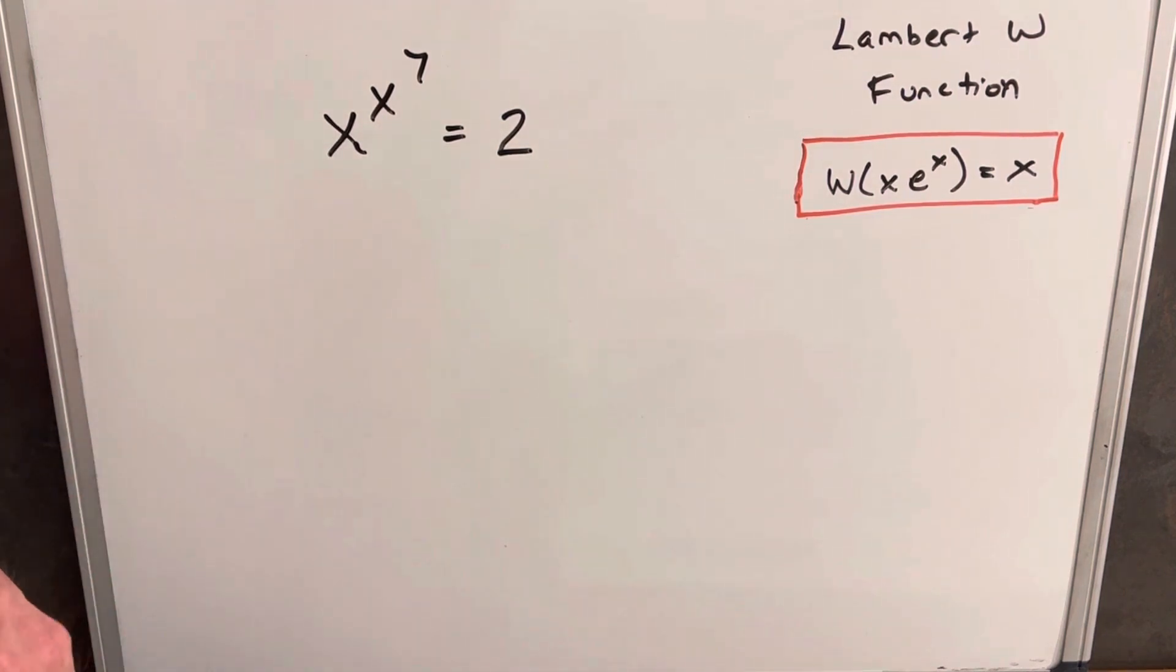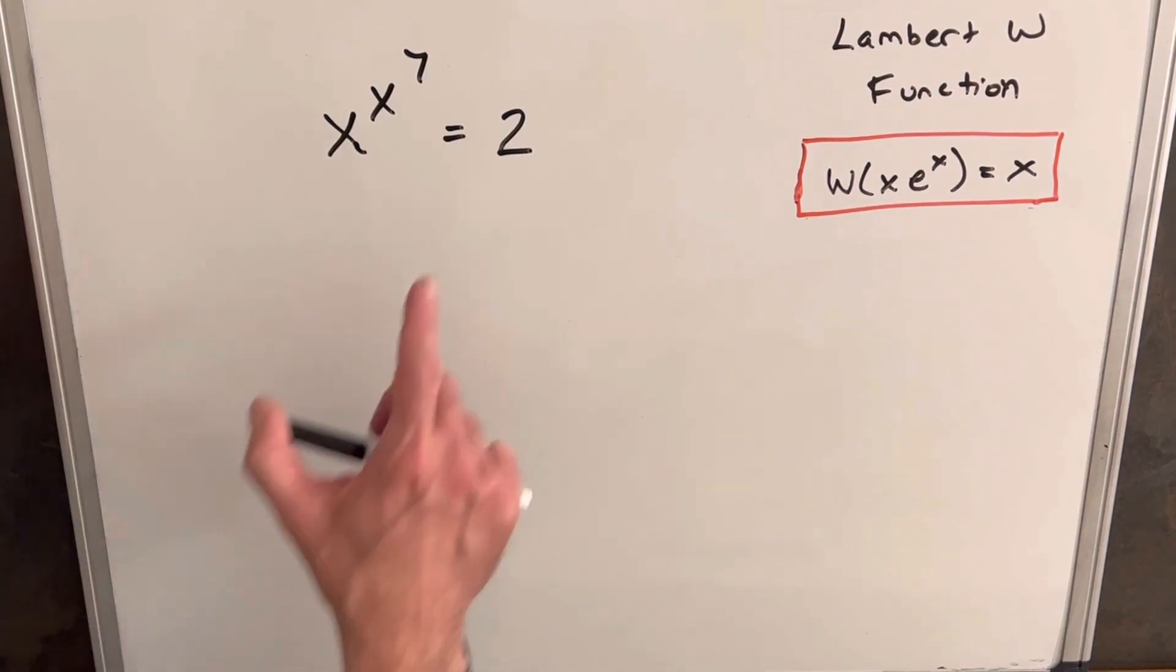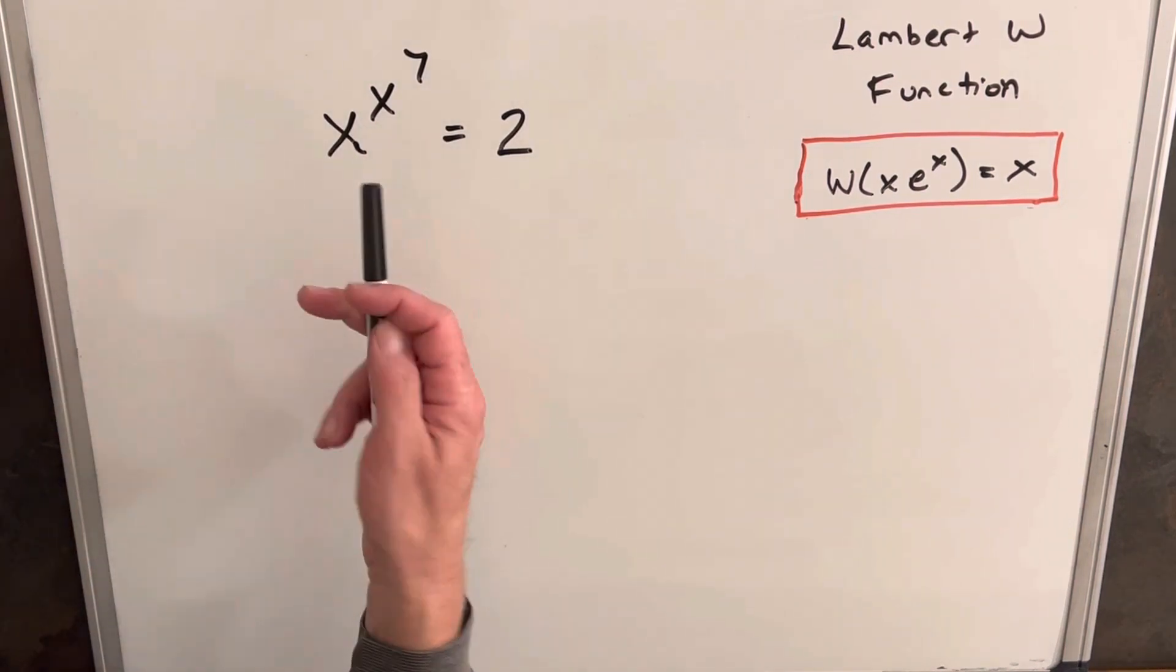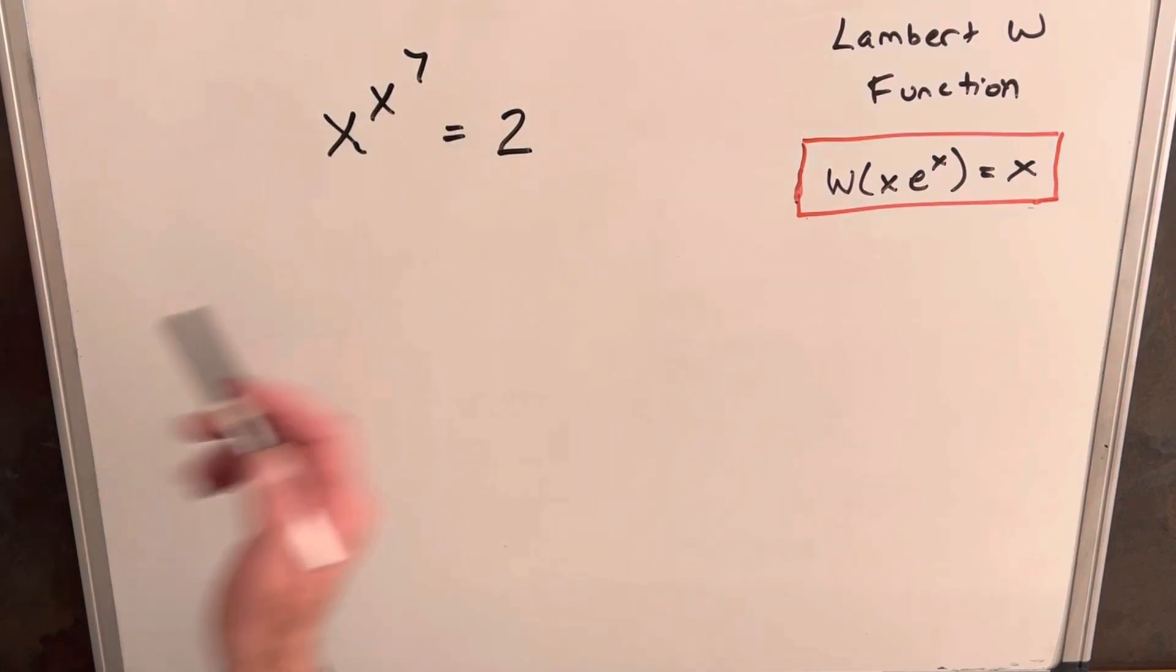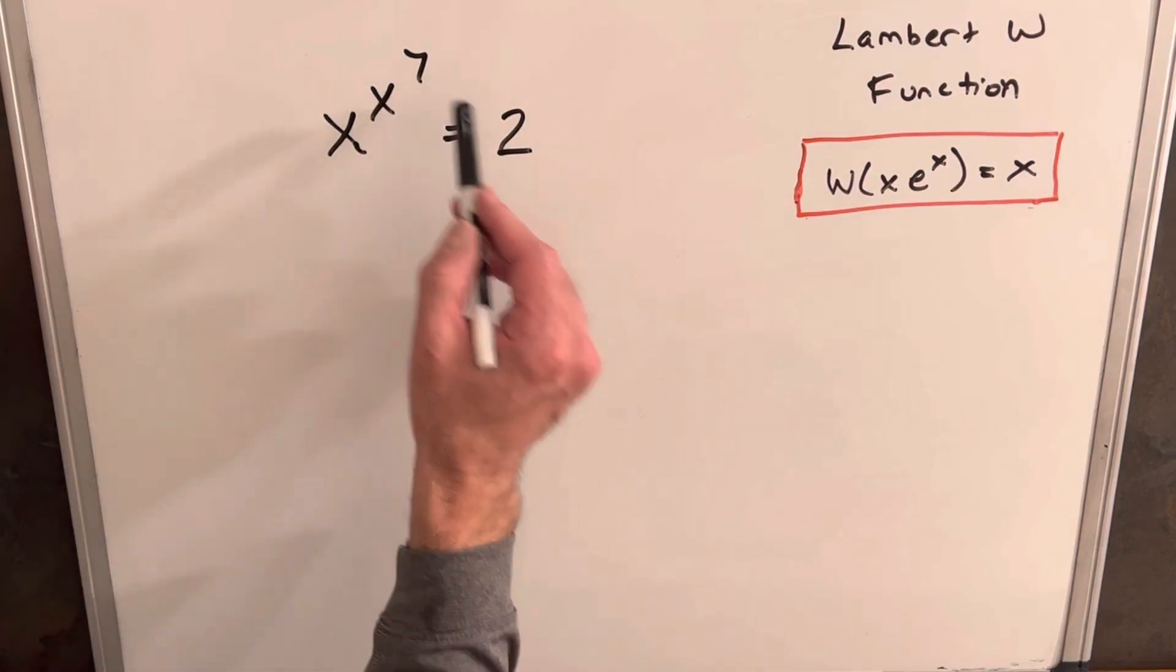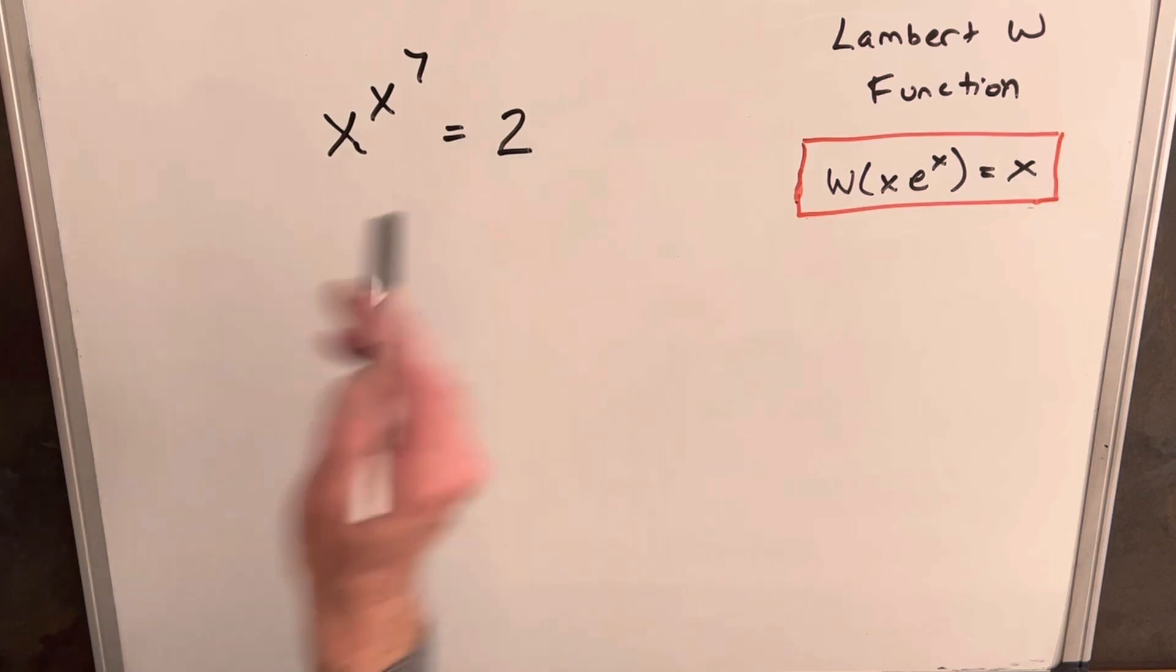We have x to the x to the 7th equals 2. The thing we noticed is that in the past when we did problems like this, I think I did one where x to the x to the 5th equals 5. But because this exponent and this value on the right-hand side are different, it's going to make it a little more difficult, and that's why we're going to use the Lambert W function on this problem.